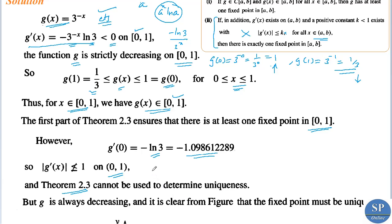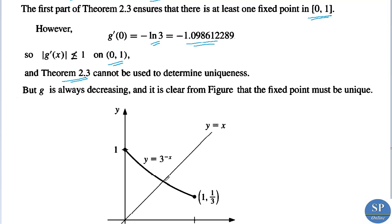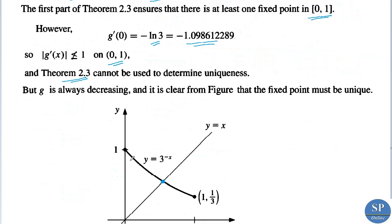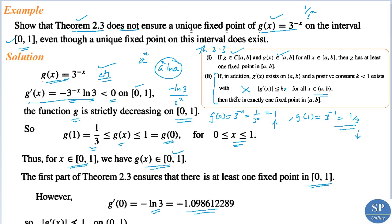However, plotting the graph of g(x) = 3^(-x), we can see that there exists only one fixed point, since the function is strictly decreasing. The fixed point is unique, but Theorem 2.3 does not guarantee it. We have verified that Theorem 2.3 does not ensure a unique fixed point for this function on [0, 1], even though such a unique fixed point actually exists.